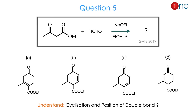Question number 5. The starting material has a dichlorinated compound with an active methylene group and an ester at the terminal. You are using formaldehyde, base, ethyl alcohol, and heating. They ask you to find the product. The product is mostly a six-membered cyclic ring which differs in the alkene position — whether the alkene is at the second, third, or fourth position. The position of the alkene is the real question. Cyclization is definitely involved. The answer is D.